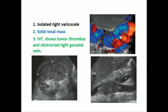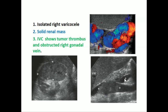This is an isolated right-sided varicocele. On abdominal survey, there was a mass in the upper aspect of the right kidney, and the IVC shows a tumor thrombus definitively blocking the right gonadal vein.